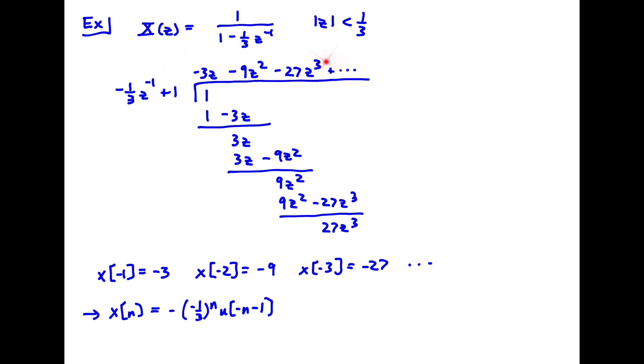So now I get a different power series. And it's the same algebraic expression here, but I get a different power series out because I've reversed the order in which I'm doing the long division. And when I do that, I get a different set of individual terms to inverse transform, again, corresponding to this different ROC. So x of minus 1 is minus 3. x of minus 2 is minus 9. x of minus 3 is minus 27. And so on.